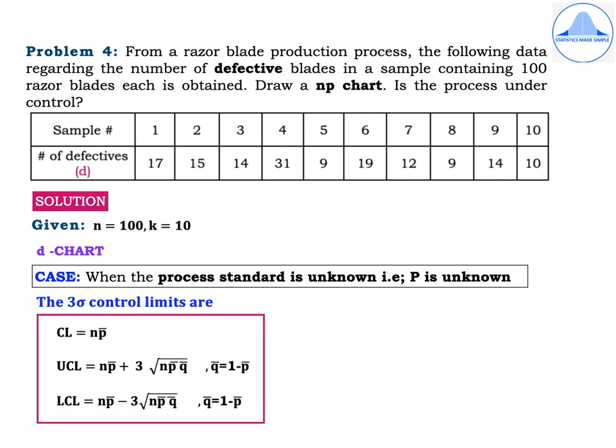Problem 4: From a razor blade production process, the following data on the number of defective blades in samples of 100 each is obtained. Draw an NP chart — is the process under control? Sample numbers 1 to 10 have defectives: 17, 15, 14, 31, 9, 19, 12, 9, 14, 10. The number of defectives D is marked in pink. Given: n = 100, k = 10.